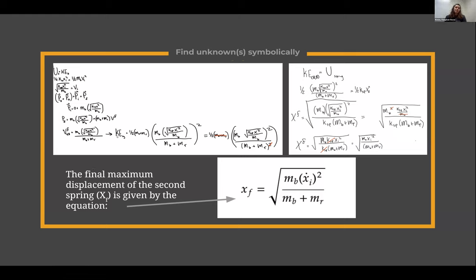Knowing the final velocity, we calculated the kinetic energy of the two-block system, which we used to solve for the spring potential energy by setting them equal since mechanical energy is conserved. From the spring potential energy, we solved for the final displacement of the second spring — our goal. The final displacement equals the square root of the mass of the blue block times the initial compression squared, all over the mass of the blue block plus the mass of the red block.